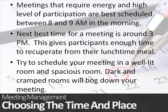Meetings that require energy and a high level of participation are best scheduled between 8 and 9am in the morning, when most workers are not yet engaged in their daily work, giving you their full attention and energy. The next best time is around 3pm, which gives participants enough time to recuperate from lunch and provides at least an hour of cushion before they start thinking about going home. Low-key meetings can be scheduled any time during the day.